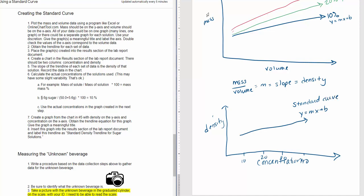Then you're going to find the density of your unknown beverage using a similar method by plotting it on a mass and volume curve. And then you're going to insert it into this equation. Now y is density, so this is density equals the slope times the concentration plus b. So when you find the density of your unknown beverage, it gets inserted as y and you solve for x.